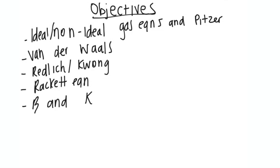Really quickly before I start, I just want to clarify a few things. When I'm talking about reduced temperature — which I've talked about in my heat effects video — it's T over T-critical. So if you have ammonia at 300 degrees, your T would be 300 and your T-critical is something you'll find specific to ammonia in your tables. And the same thing for P-reduced: it's pressure over critical pressure.